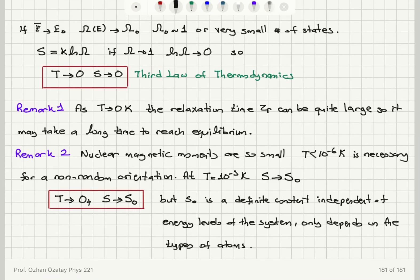However, experimentally, this could be very difficult to achieve because as the temperature goes so low, the relaxation time becomes very high, so it may take a long time to reach equilibrium. And for more practical purposes, if you look at, for example, nuclear magnetic moments, they're so small, even a temperature of micro-Kelvin is not enough to say you're close to the zero Kelvin, so you need to go below micro-Kelvins in order to get a non-random orientation. For a more practical temperature like milli-Kelvin scale that can be achieved in the labs, we find that the entropy approaches, for most systems, a constant value S0 that is independent of the energy levels of the system but only depends on the types of atoms.